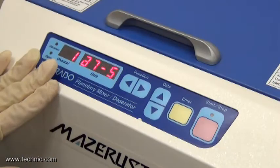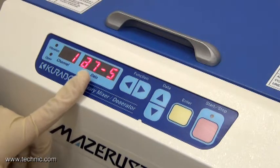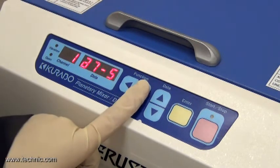Then, we will program the mixing speeds and time. For step A, the revolution speed is 7 and rotation speed is 5 for 1 minute.